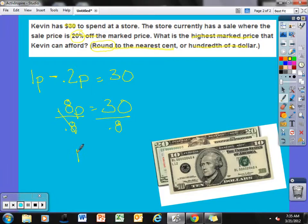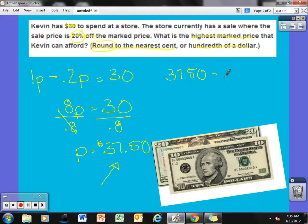The most the price of an item that Kevin can buy is $37.50. Now again, this is the price before the sales price is taken off. So if I plug this back in, I have $37.50 minus $37.50 times the 20% off, should give me a total of $30.